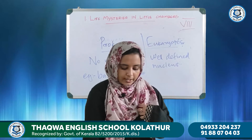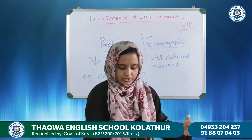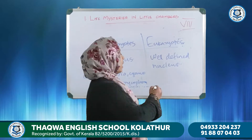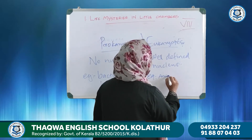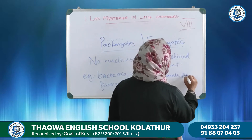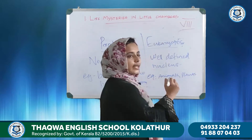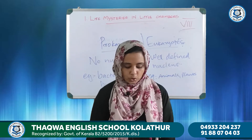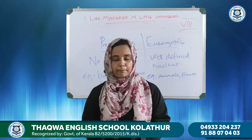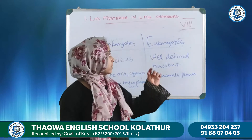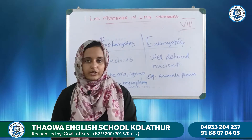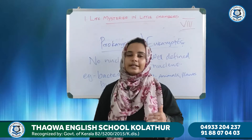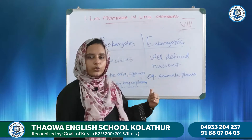Eukaryotes include cells of amoeba, animals, and plants — organisms that have a well-defined nucleus covered by a membrane are called eukaryotes. So that's about the nucleus and the distinction between prokaryotes and eukaryotes.